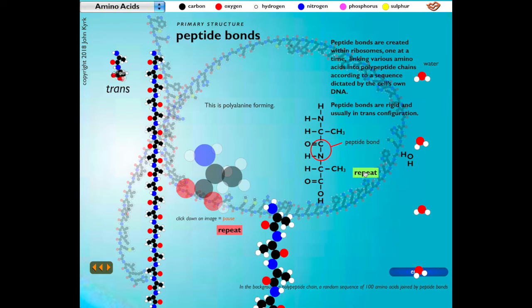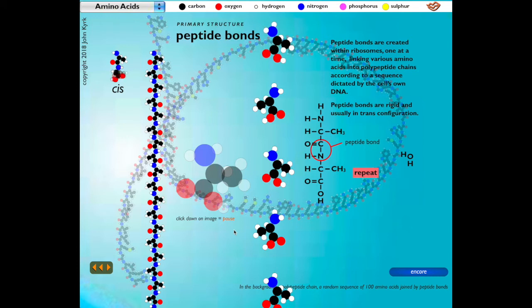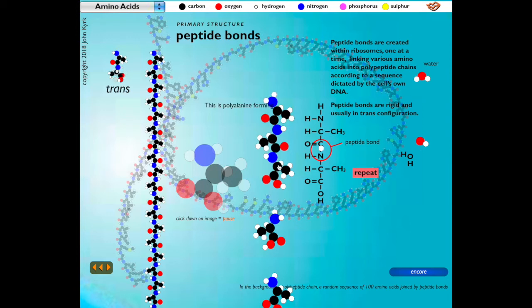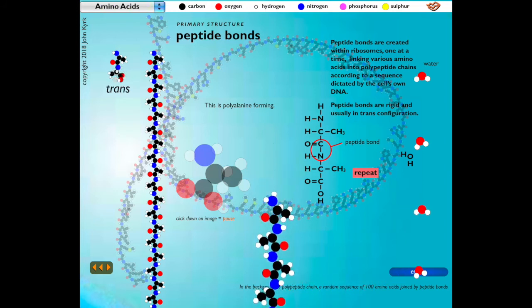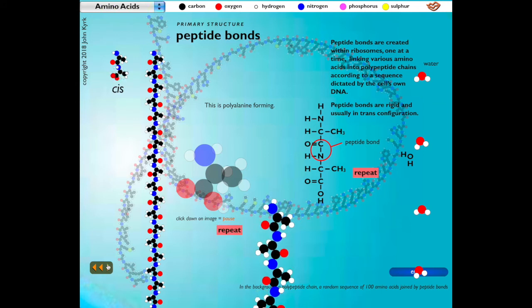Here, multiple alanine molecules form a continuous chain, a polyalanine protein. Peptide bonds are rigid and usually in trans configuration. In polyalanine, this means that the bonding carboxyl and amine groups rotate so that when joined, the methane groups in the alanine chain alternate sides of the chain. These peptide bonds are created within ribosomes, one at a time, linking various amino acids into polypeptide chains according to a sequence dictated by the cell's own DNA. The sequence of amino acids linked by peptide bonds is the primary structure of the protein.